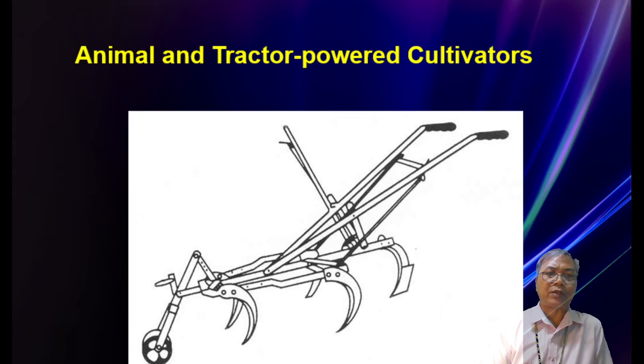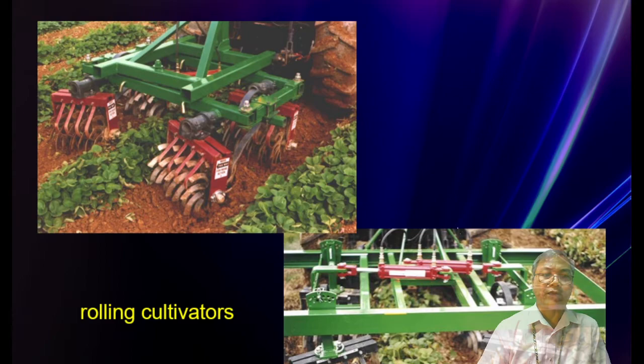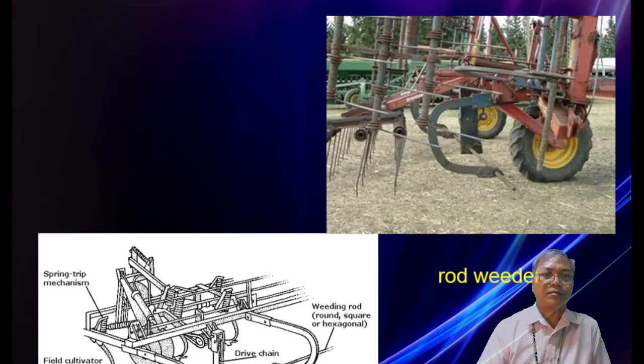Animal and tractor-powered cultivators can be attached to a tractor or to a carabao. This is the animal-drawn five-times between-row cultivator. The picture shows rotary cultivators — you can see crops in between the cultivators in the upper left. We also have the rug weeder.